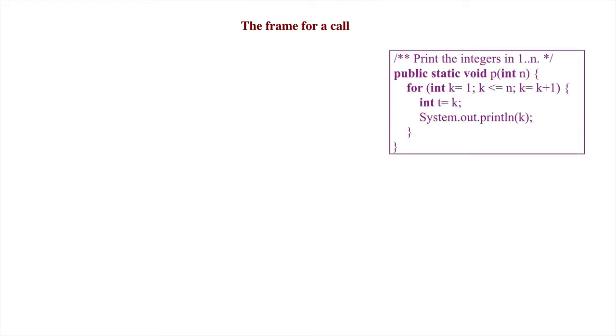Consider this procedure p, which prints the integers in the range 1 through n. We have deliberately put local variable t in the body of the loop, although it isn't necessary, in order to make the point later on.